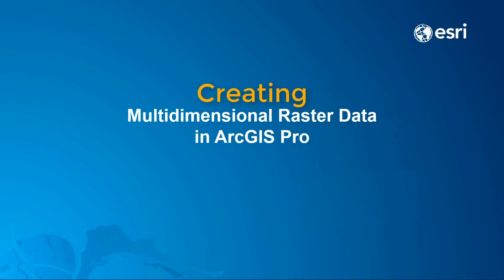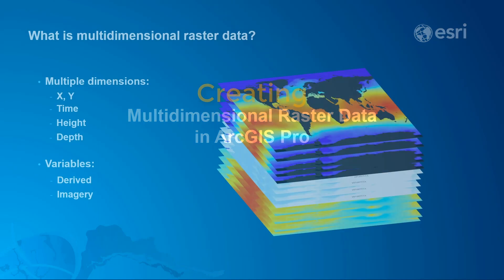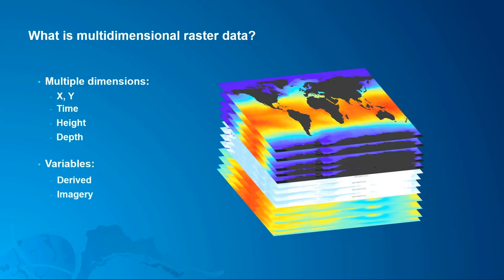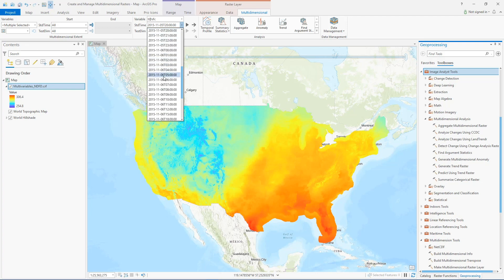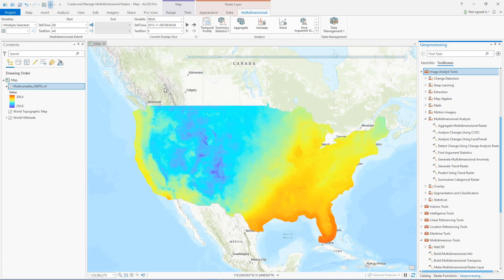Hi everyone. Today we're going to talk about creating and managing multi-dimensional raster data in ArcGIS Pro. Multi-dimensional data is data that's collected over multiple times, depths, or heights, and multi-dimensional raster data is often used in oceanography, climate analysis, and agriculture.